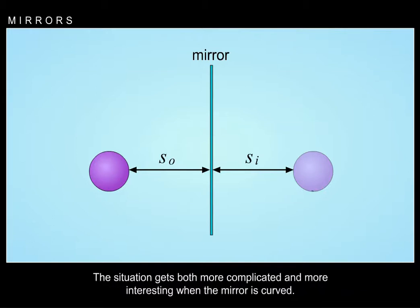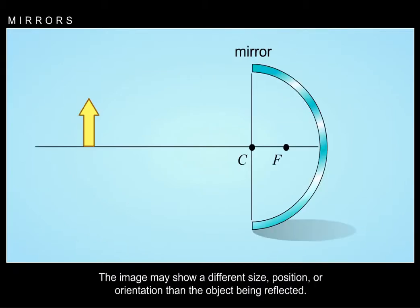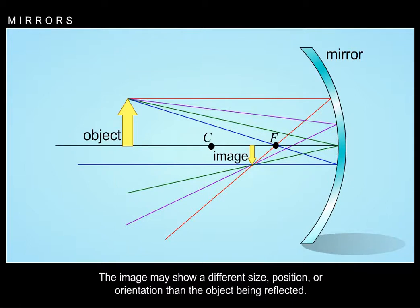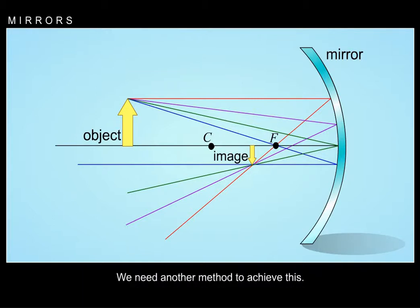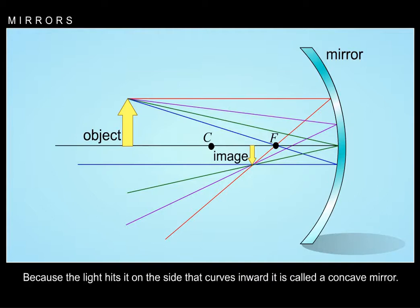The situation gets both more complicated and more interesting when the mirror is curved. The image may show a different size, position, or orientation than the object being reflected. When curved mirrors are involved, using the law of reflection directly to trace the rays becomes very difficult, so we need another method. Consider the mirror illustrated — because the light hits it on the side that curves inward, it is called a concave mirror.